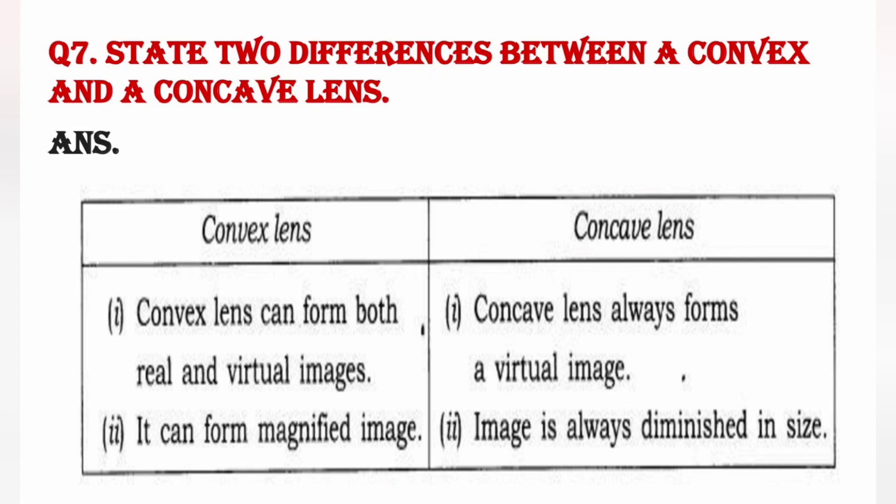Next question: state two differences between a concave and convex lens. First difference: convex lens can form both real and virtual image, lekin joh concave lens hai, woh sirf virtual image hi form karta hai. Second difference: joh convex lens hai, woh magnified image yaani ki image ko bada karke show karta hai, wohi par joh concave lens hai, woh image ko bahut hi chhoti karke dikhata hai, means diminished kar deta hai size ko.